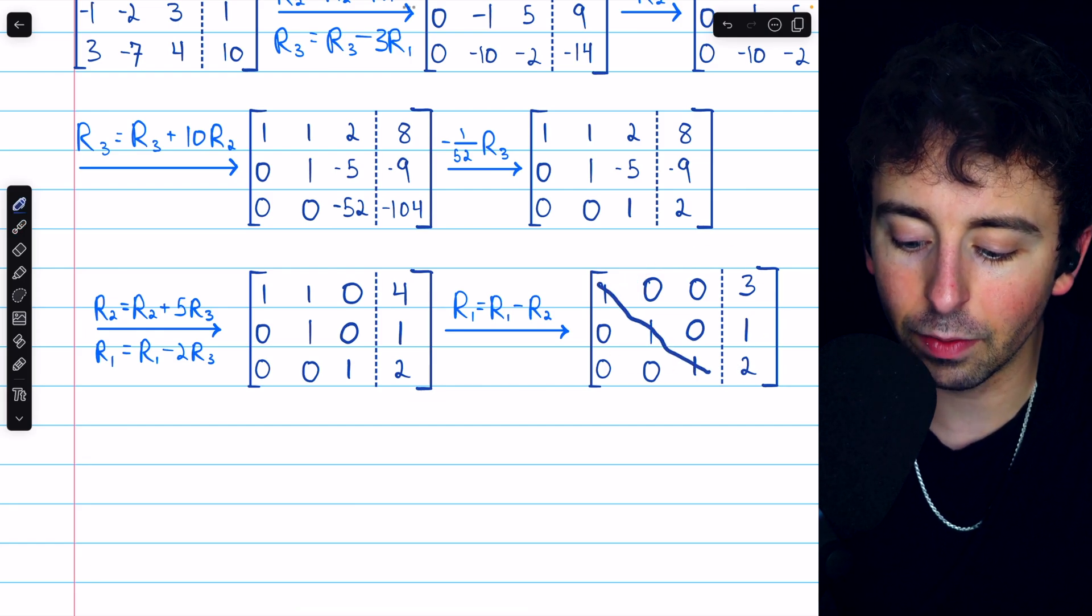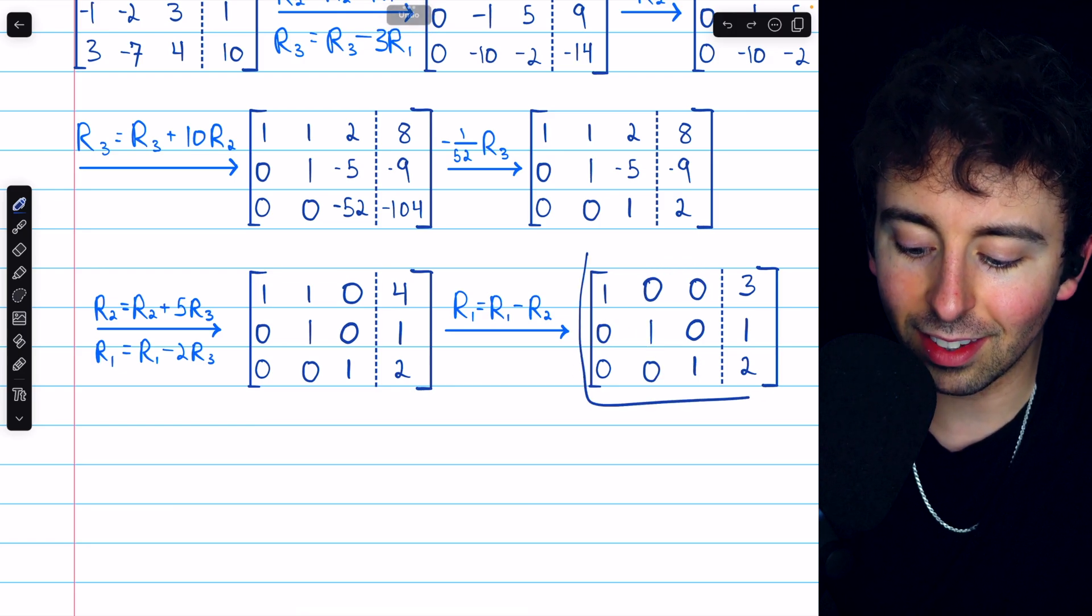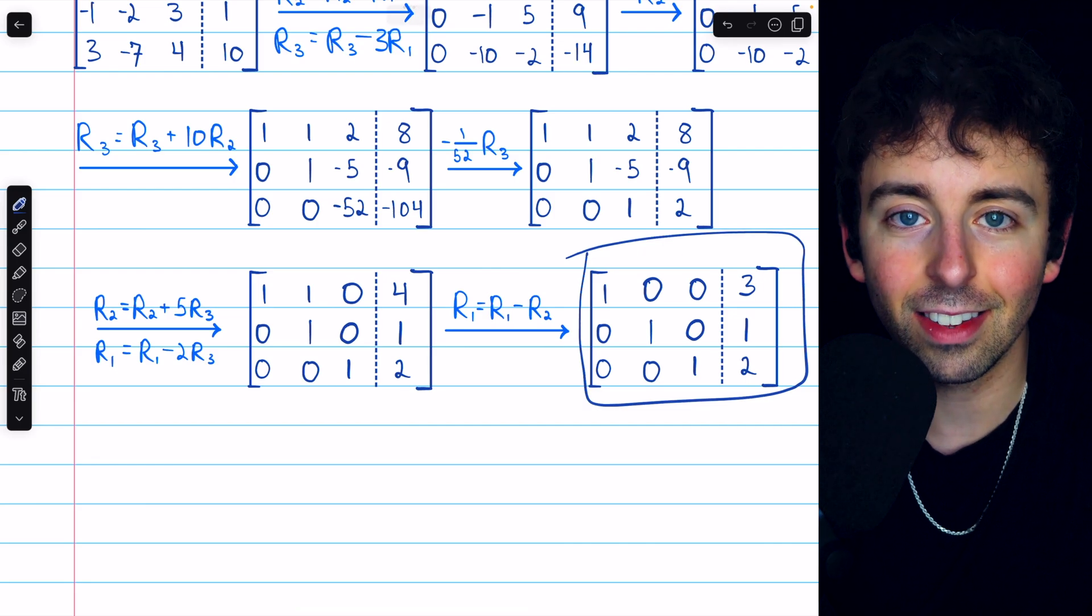Positive 1s on the diagonal of the coefficient part of the matrix, and 0s elsewhere. So this tells us precisely the solution to the system.